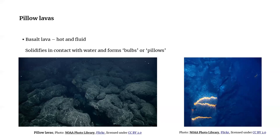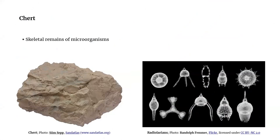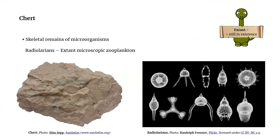Chert is made of the skeletal remains of microorganisms that settle on the ocean floor. In this case, chert is rich in fossils of radiolarians, which are a kind of zooplankton of microscopic dimensions that have been populating the world's oceans since about 500 million years ago.